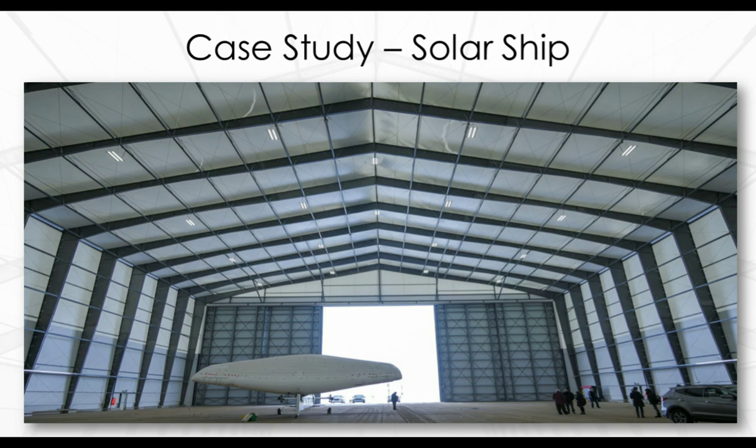As an assembly facility for Solar Ship, a new type of aircraft that runs completely on solar power, the size and shape of the aircraft required straight sidewalls and specialized doors, making many traditional hangar buildings prohibitively expensive. Legacy met Solar Ship's tight budget and timeline requirements. The building features rooftop solar panels allowing it to be completely off-grid while supplying power to the door, LED lighting, and charging stations. The fabric is flame-retardant to comply with NFPA 701.